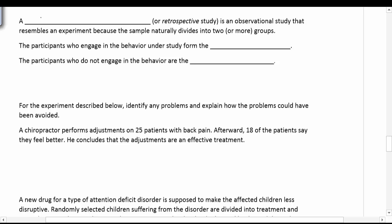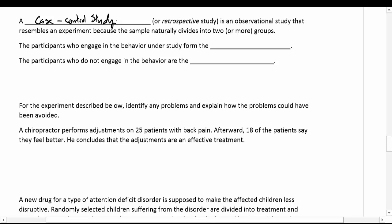A case control study, also called a retrospective study — retrospective means looking back at the past — is an observational study that resembles an experiment because the sample naturally divides into two or more groups. It's not a current treatment or experiment; rather, researchers look back at somebody else's results and make an analysis. The participants who engage in the behavior under study form the cases, and the participants who do not engage in the behavior are called the controls.